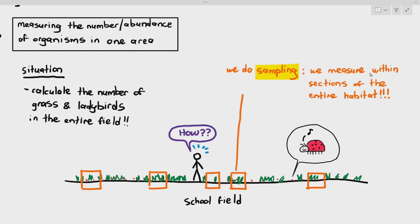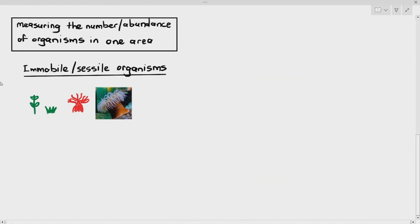Measuring the abundance, number or abundance of organisms in one area, I will divide it into two. First is for immobile or sessile organisms. Immobile or sessile organisms basically means they are not able to move or they are stationary. Examples of sessile organisms will be things like your plants, grass, even sea anemone. The sea anemone is an animal, by the way. It is an animal, but it is sessile or it is immobile.